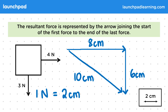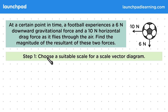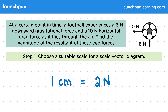Let's have a look at another example. At a certain point in time, a football experiences a 6 newton downward gravitational force and a 10 newton horizontal drag force as it flies through the air. Find the magnitude of the resultant of these two forces. For step 1, we need to choose a suitable scale for the scale vector diagram. We want a scale that works in the space we have, and it's good to do this at the start to make the working easier. In this example, we've chosen 1 centimetre to equal 2 newtons.